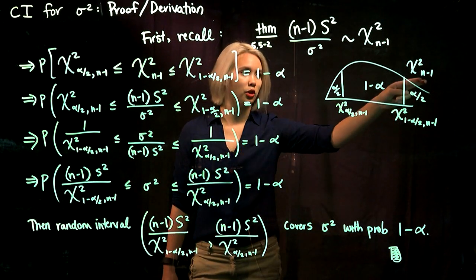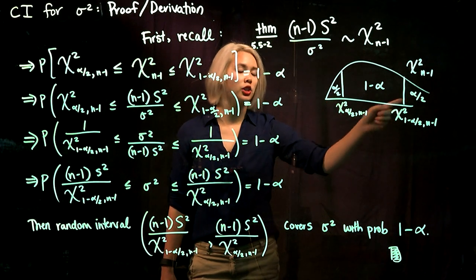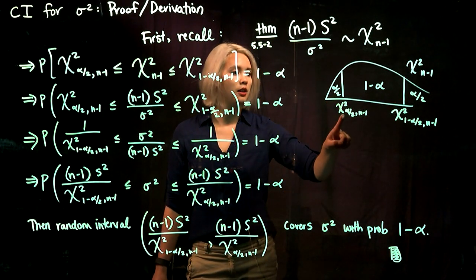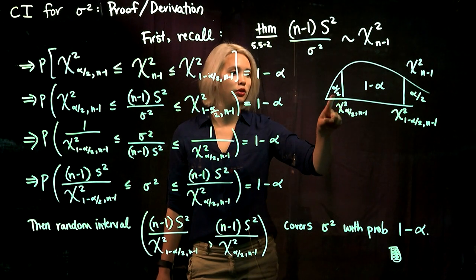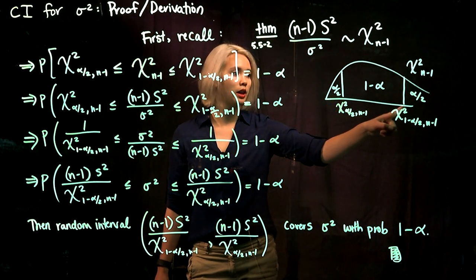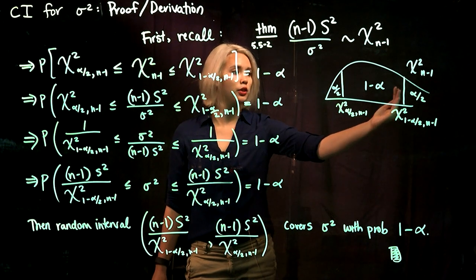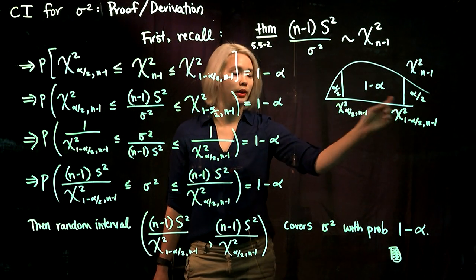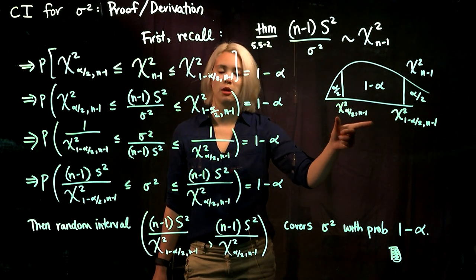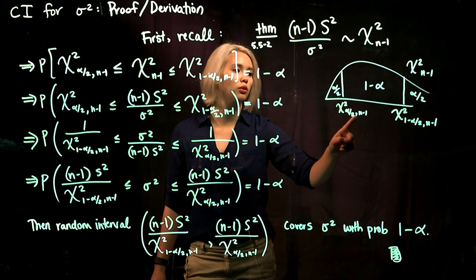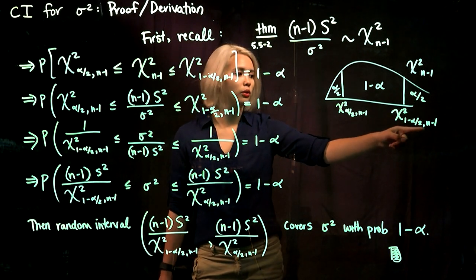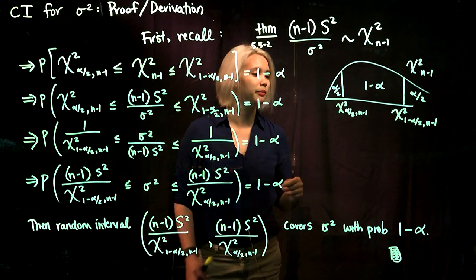Now we know our distribution and we know what we want to have in each tail. So we can go ahead and use a chi-squared table to find the cutoff so that we have alpha over 2 in our lower tail, and the cutoff so that we have 1 minus alpha over 2 below that point. We find these two quantiles: chi-squared alpha over 2 comma n minus 1, and chi-squared 1 minus alpha over 2 comma n minus 1.